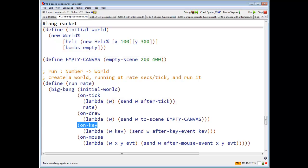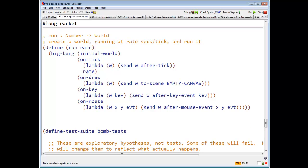On key, what do I do? I say, world, I'm going to call the method after key event on the world, the world's after key event with that key event, and similarly for on mouse. And that is all there is to say.